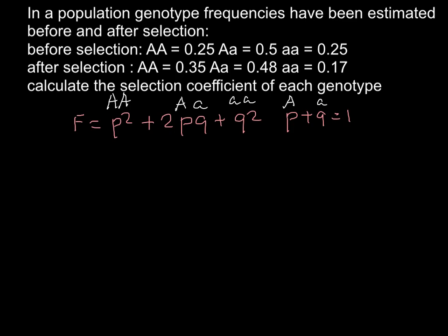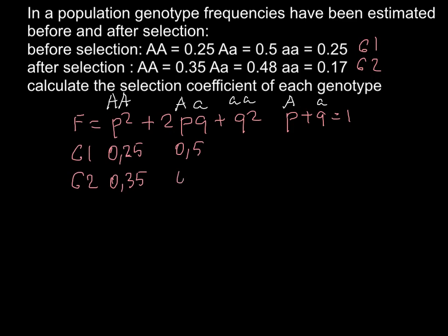Let me list all the frequencies in generation 1 and generation 2. For the homozygous dominant, we have frequency 0.25 in generation 1, and it has changed to 0.35 in generation 2. For the heterozygous, it changed from 0.5 to 0.48 in generation 2. And for the homozygous recessive, it changed from 0.25 to 0.17.